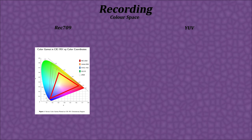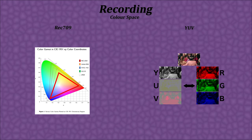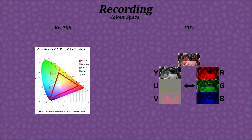YUV is an approximation of RGB. It's the color format that interprets the color gamut in a way that reduces the overall file size, but in a soft enough way to mask the difference from human perception. In other words, YUV describes a color space that allows for chroma subsampling.